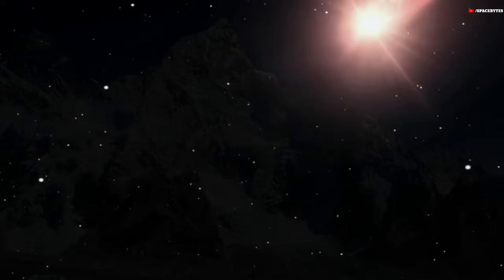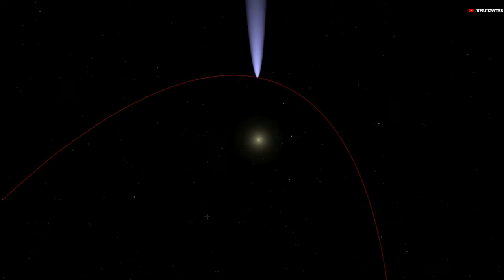Space scientists have warned that a horned comet nearly three times the size of Mount Everest has exploded and is apparently hurtling towards Earth. As per the reports, the comet exploded for the second time in four months and is now dashing towards Earth.